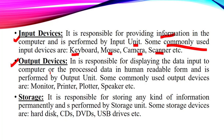Next we have output devices, which are responsible for displaying the data. These are basically responsible for displaying the data input to the computer or processed data in human readable form. Whenever we type anything in the computer, we are able to see that input in our computer's display. Or when our computer generates any result, that result is also available to us using these output devices. Some most commonly used output devices are monitor, printer, plotter and speaker.